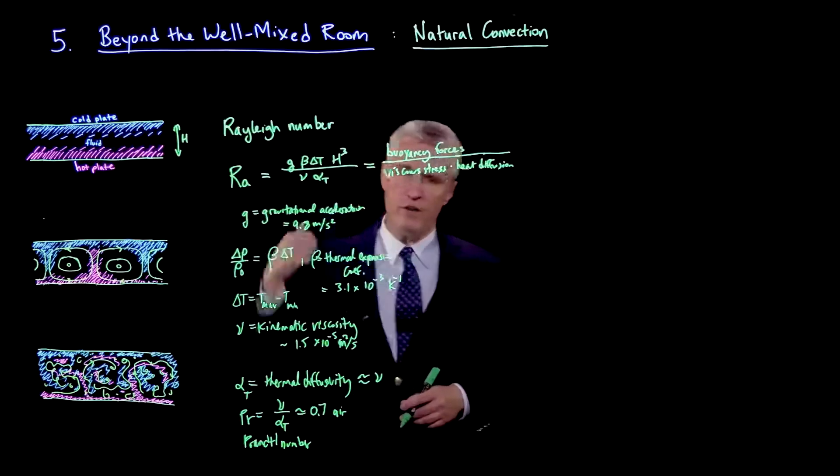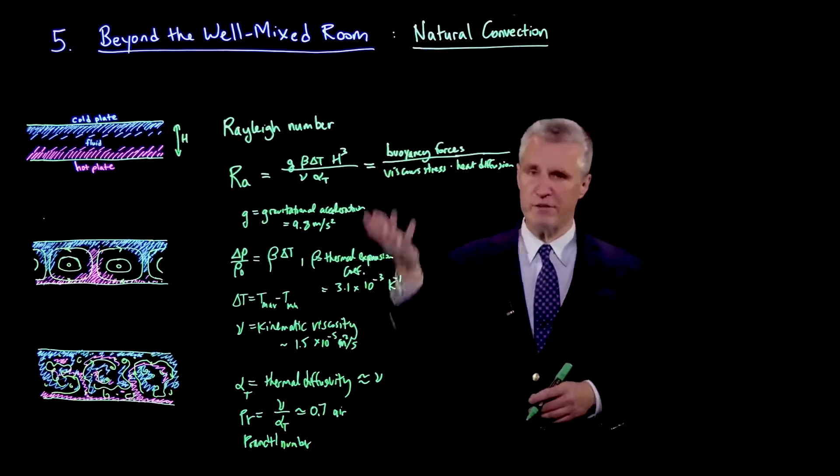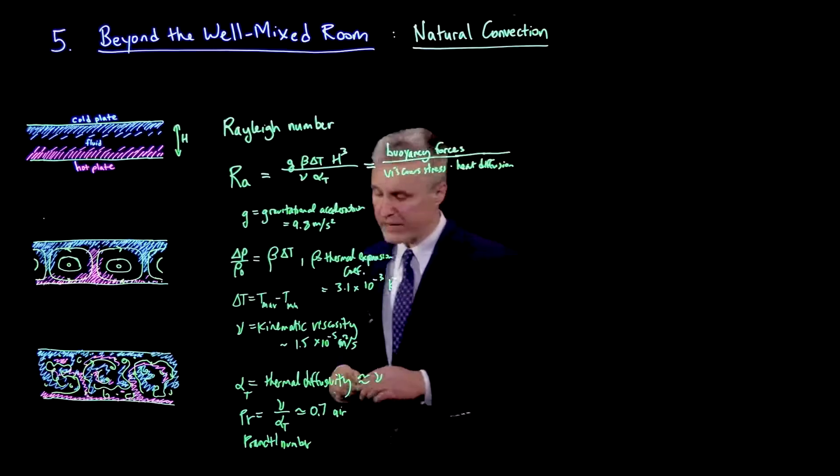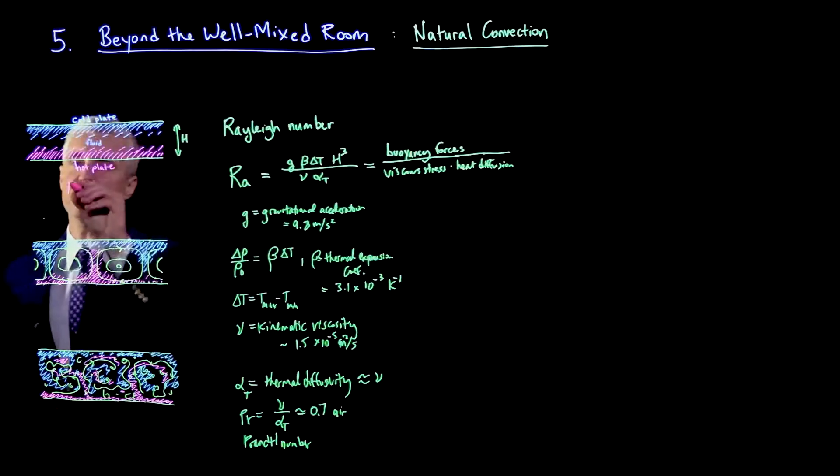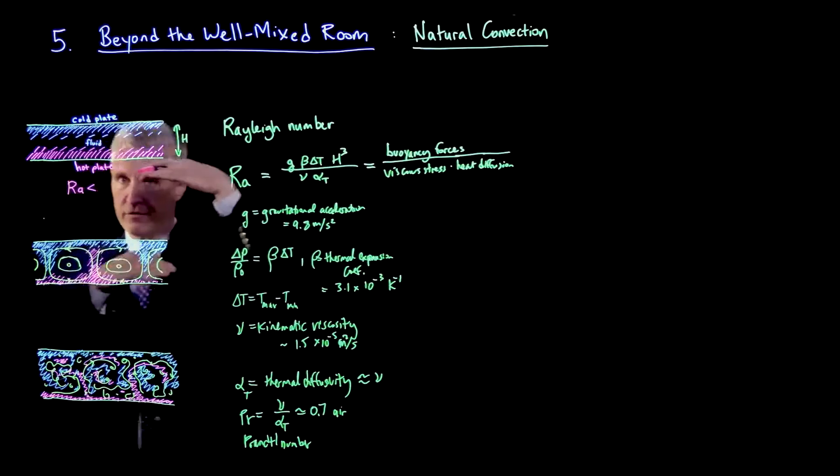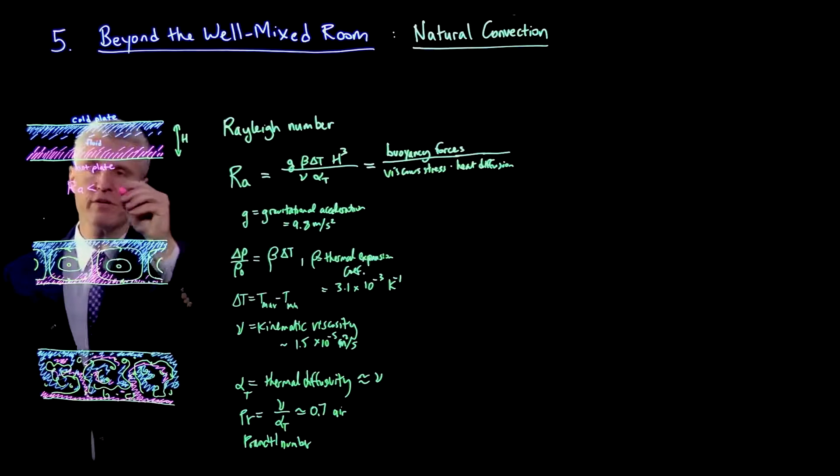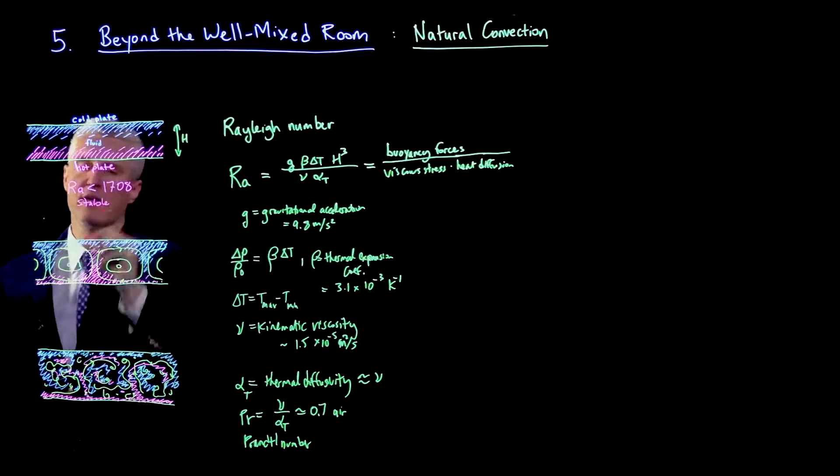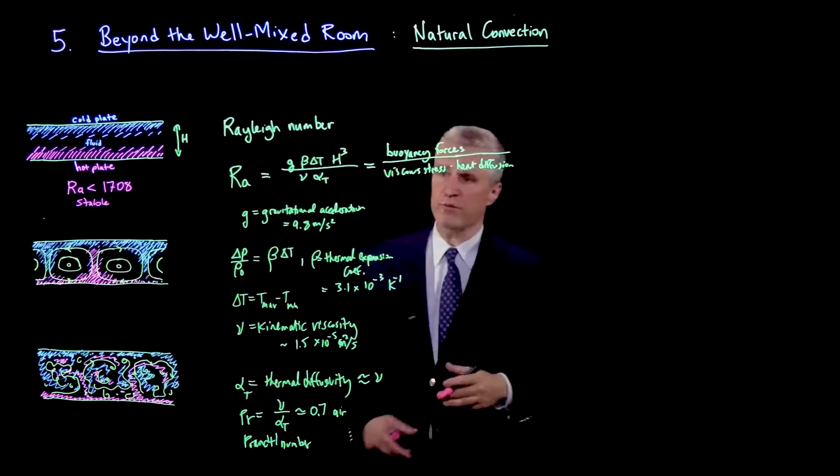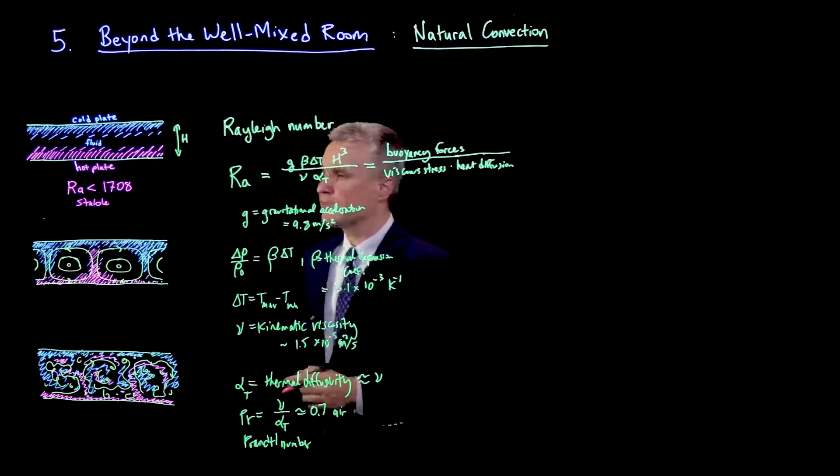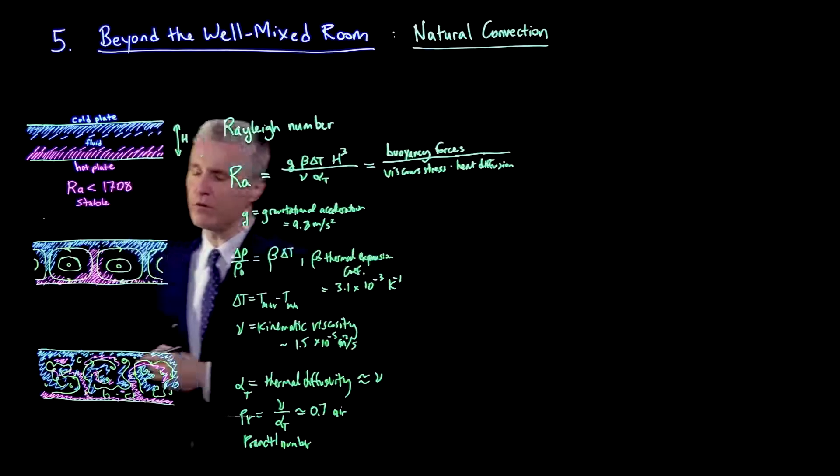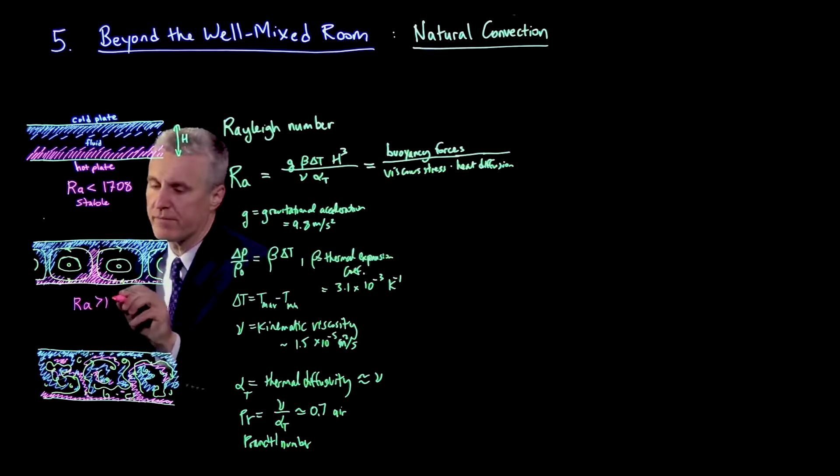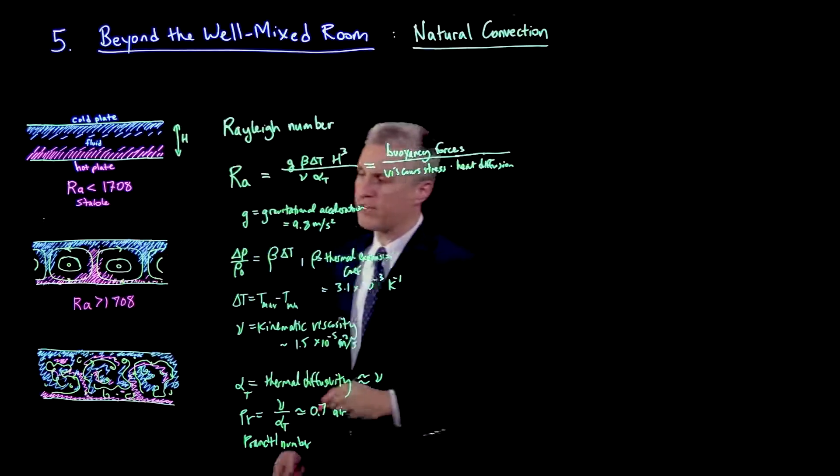What I've sketched here is an unstable density gradient, where if the cold is above the hot, there's a heavy fluid above a light fluid. At conditions of low Rayleigh number, this is stable. In particular, for this case of two fixed plates and an infinite layer of fluid, if the Rayleigh number is less than 1708, then we have a stable situation. It's at least metastable - stable to small perturbations. But at this critical Rayleigh number of 1708, we start to get some spontaneous flows.